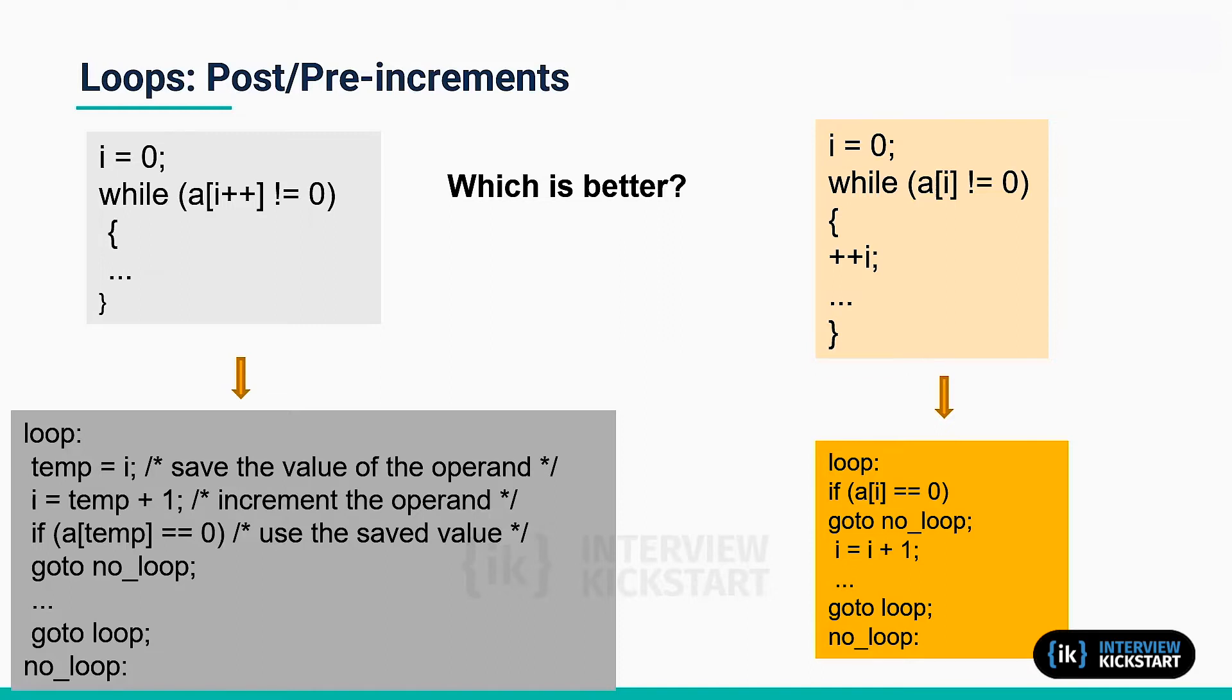This is how it will be implemented - this is pseudo code, not assembly code. The value of i in the array is incremented, increment the operand, then use it as an index to the array, compare the termination condition, and based on that either stop the loop or go to the loop.